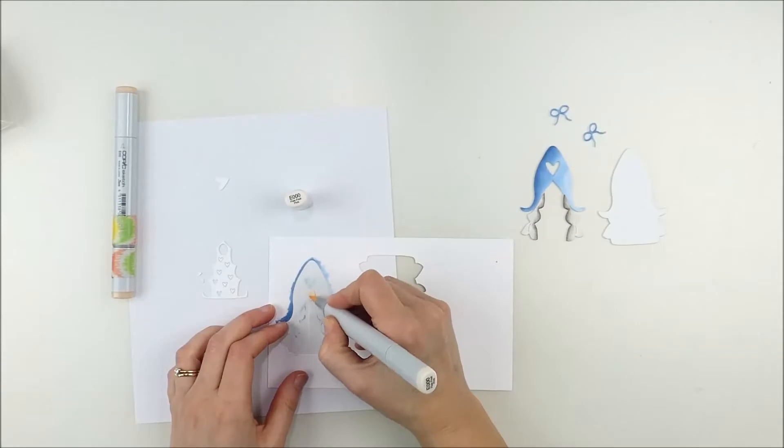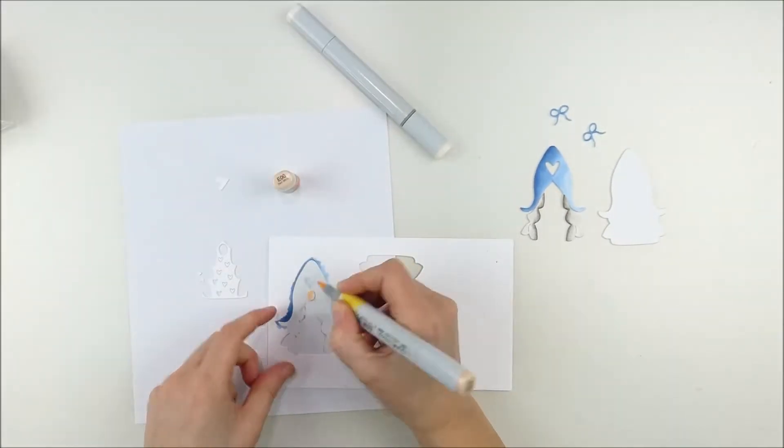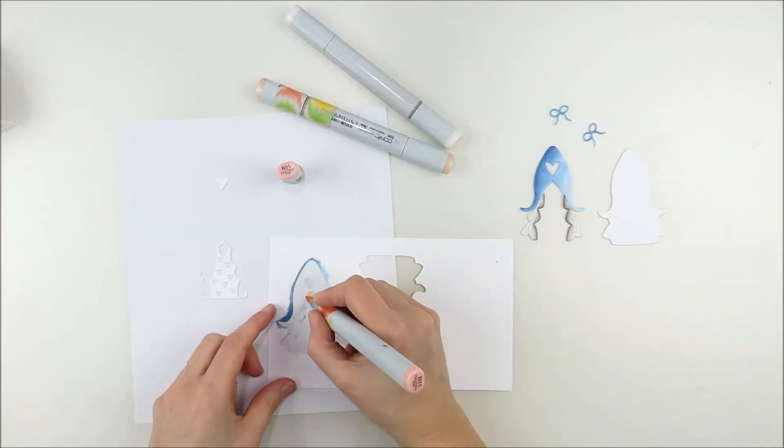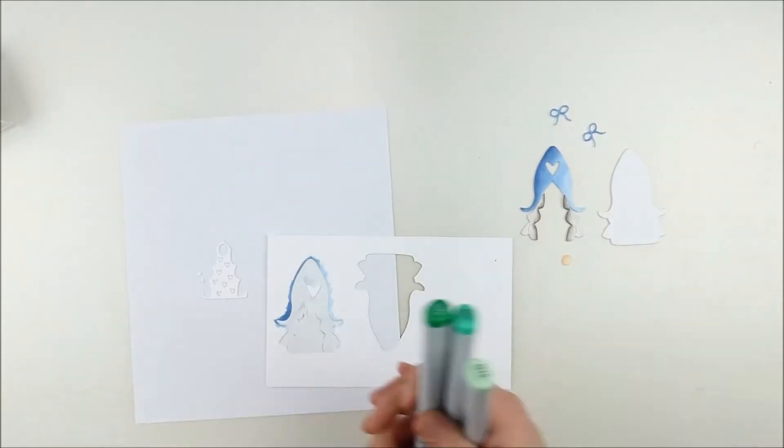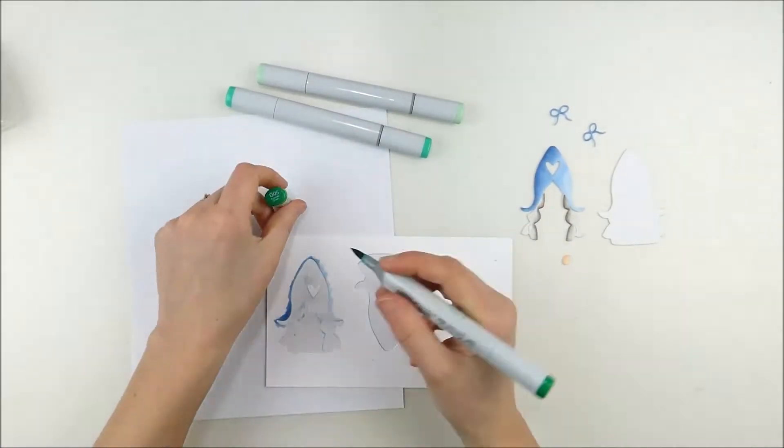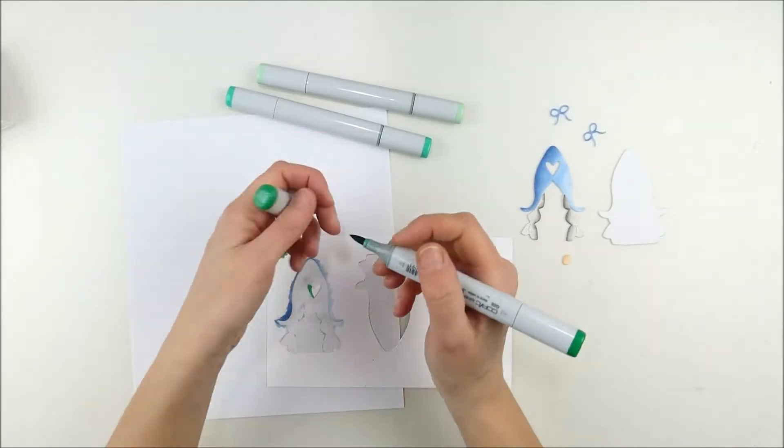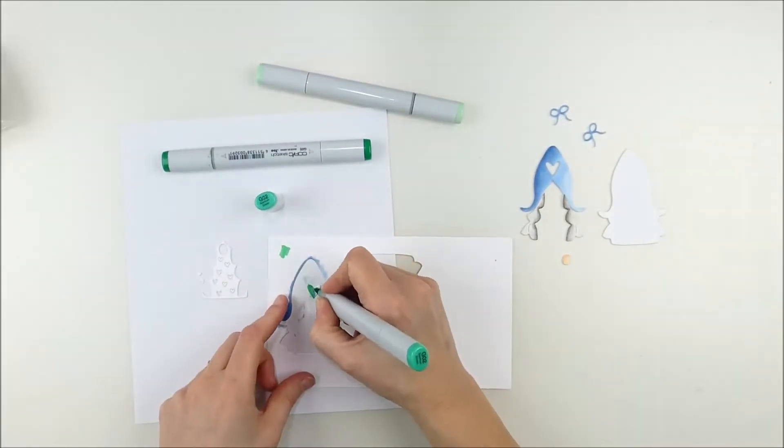All right, we're gonna do the little nose on there and just kind of sticking that in the middle there. Again the same thing, two colors just to kind of blend on there, and actually three. I decided to add a little tiny bit of pink.